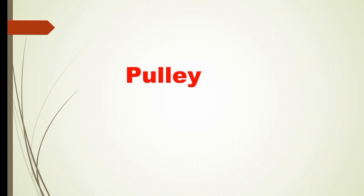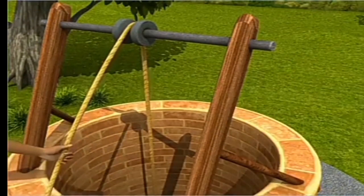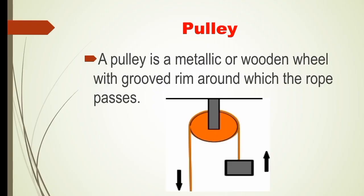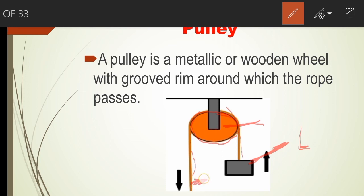Next topic is pulley. Water is drawn from a well by an arrangement called a pulley. In this arrangement, there is a wheel with a grooved rim around which a rope passes. A pulley is used to raise heavy objects. A pulley is a metallic or wooden wheel with a grooved rim around which the rope passes. This is used to lift heavy loads. The load is attached on one end and the force — called effort — is applied on the other end of the rope.